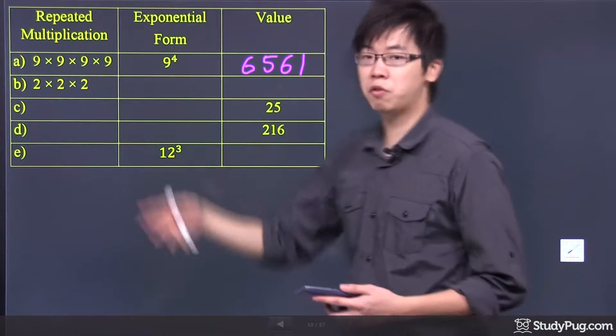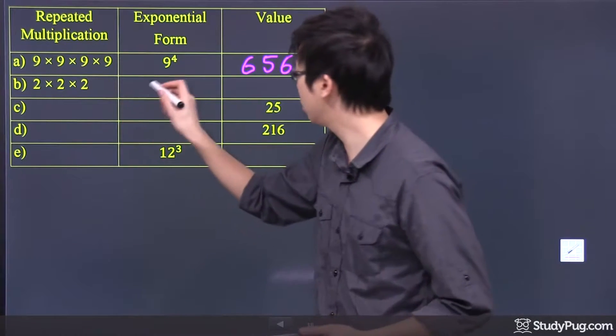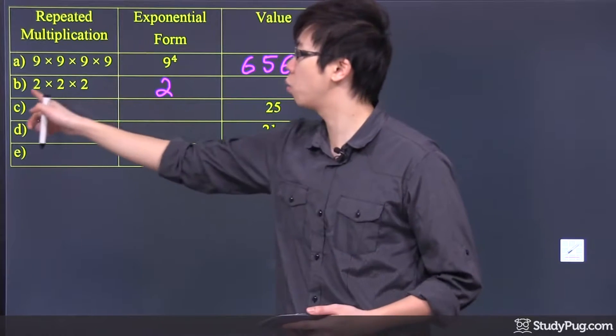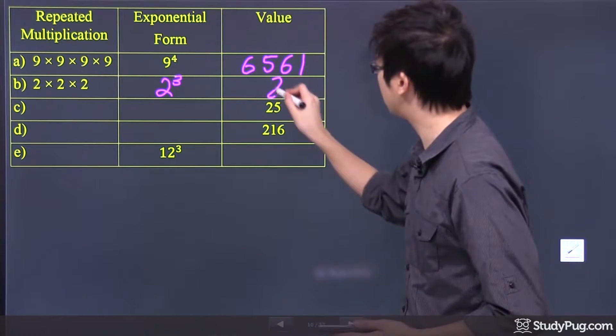6,561. So, we're going to quickly fill out the rest of this table. We got 2, the base number is 2, raised to the power of 3 times, and 2 to the power of 3 is just 8.